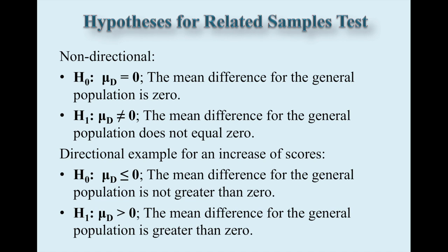These are some of our hypothesis pairs. For a non-directional or a two-tailed test, our null hypothesis for a related sample T-test would sound like this. Null hypothesis is the average for differences equals zero. Or in language, the mean difference for the general population is zero. The alternative would then mean the mean difference, population mean difference, does not equal zero. Or that something is, it could be greater than zero or less than zero.